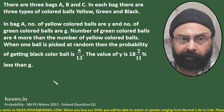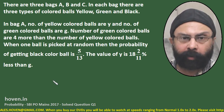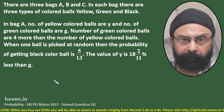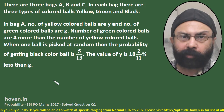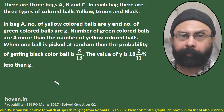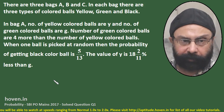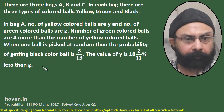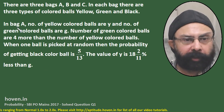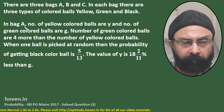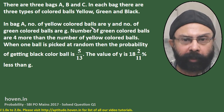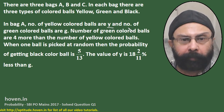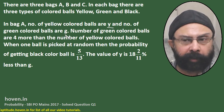Our first objective is to calculate the number of different types of balls in each bag. Once we are able to calculate that, we will be able to answer the questions. So let us start with bag A. In bag A, the number of yellow colored balls are Y, and the number of green colored balls are G.